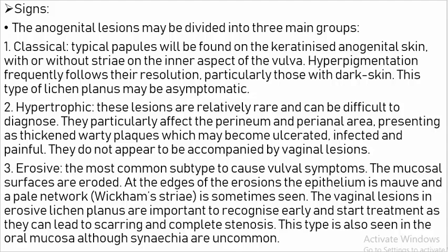Signs: The anogenital lesions may be defined in two to three main groups. Classical: Typical papules found on the keratinized anogenital skin, with or without striae on the inner aspect of the vulva. Hyperpigmentation frequently follows their resolution, particularly in those with dark skin. Hypertrophic: Relatively rare and can be difficult to diagnose. Particularly affects the perineum, presenting as thick warty plaques which may become ulcerated, infected, and painful. Does not appear to be accompanied by vaginal lesions. Erosive: The most common subtype to cause vulval symptoms.